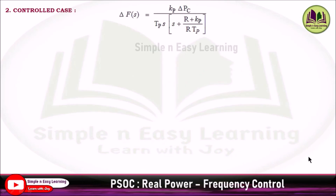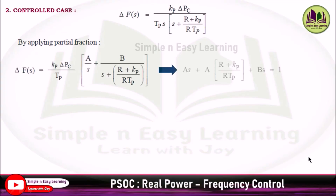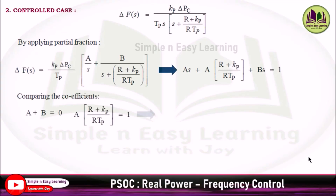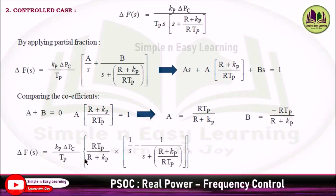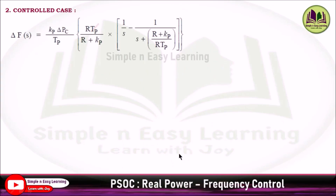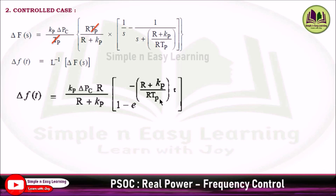Again, applying partial fractions in the same way as the uncontrolled case gives A equal to R times TP divided by R plus KP and B equal to minus R times TP divided by R plus KP. Substituting into the main equation, cancelling TP, and taking the Laplace inverse gives the final expression. The only difference from the previous case is del PC instead of minus del PD. This is the final expression of the controlled case.